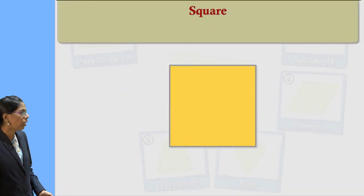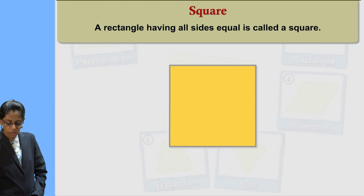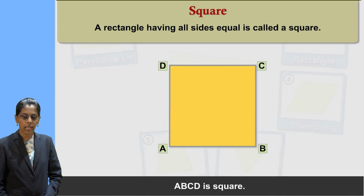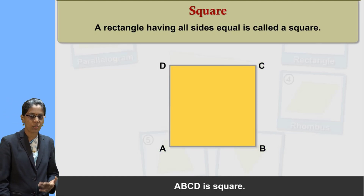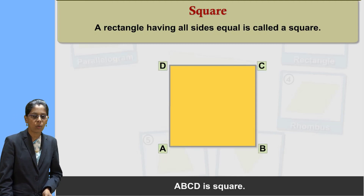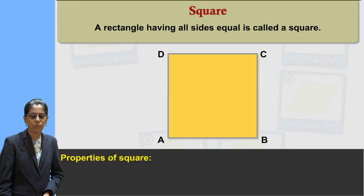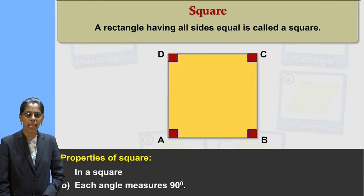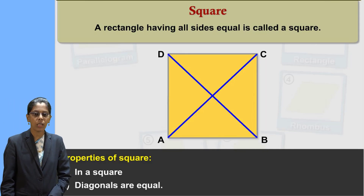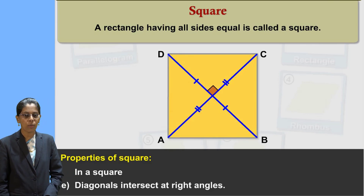Then let us see the next type of quadrilateral: a square. In the figure, square ABCD is given. All sides of a square are equal — AB is equal to BC is equal to CD is equal to AD. The properties of a square are: all sides are equal, each angle measures 90 degrees, and diagonals are equal.